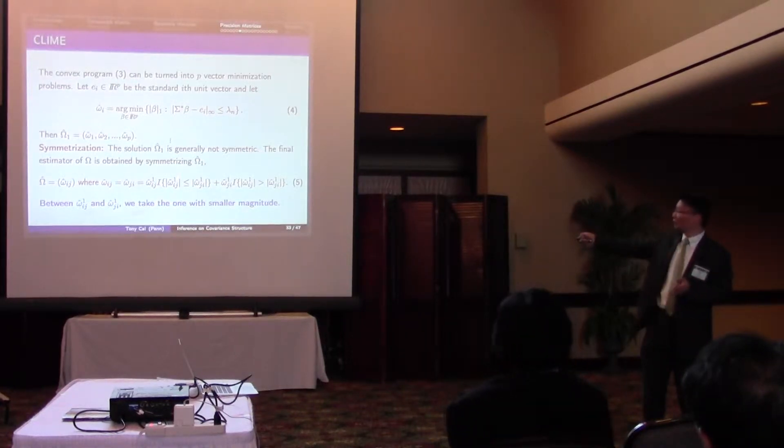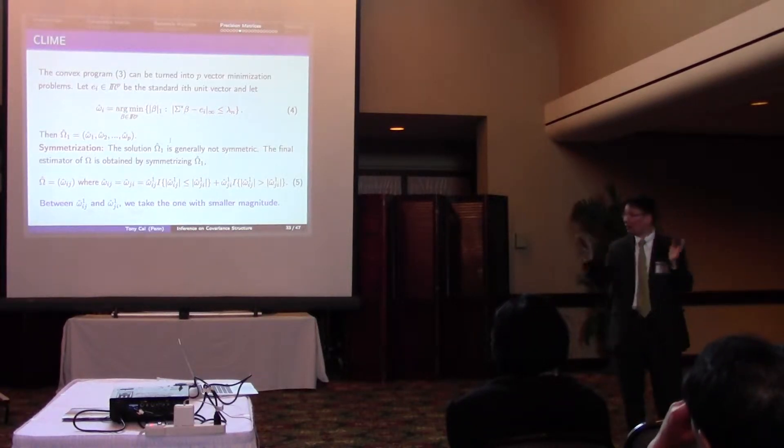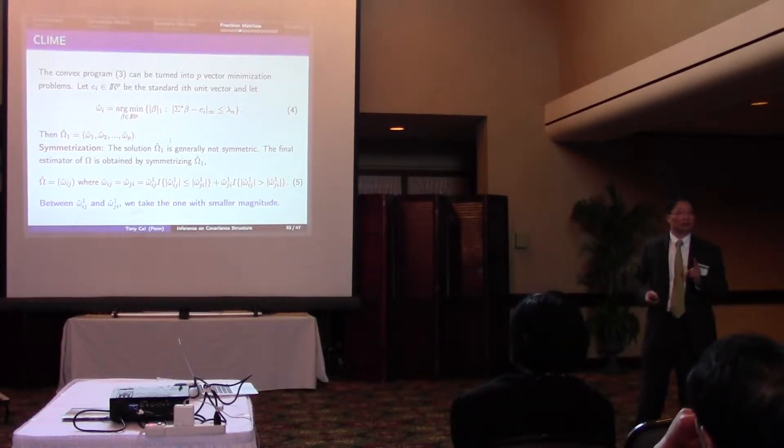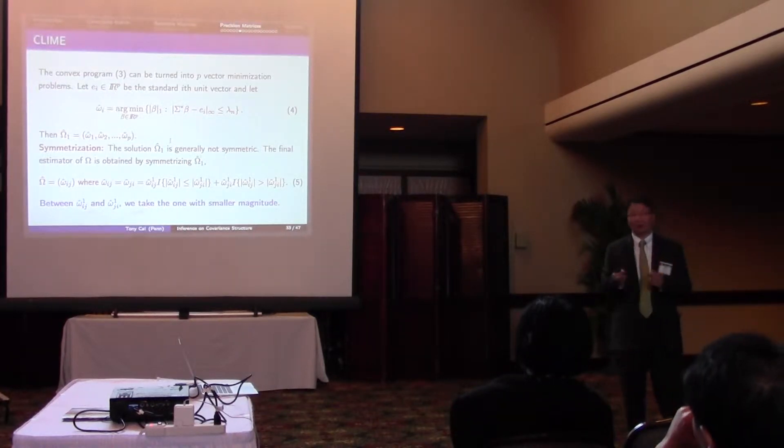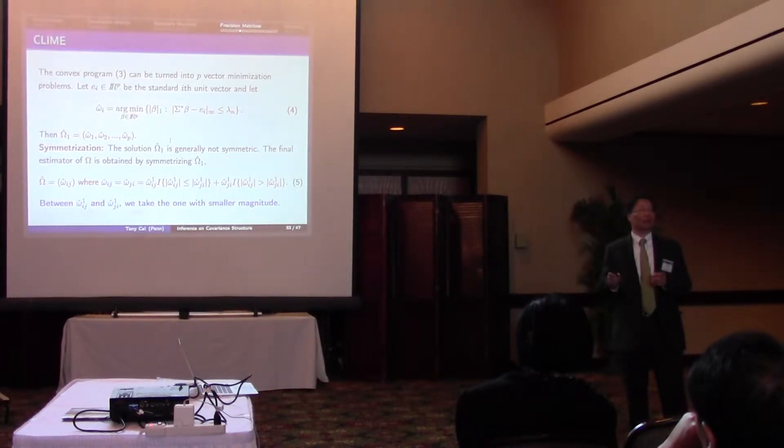That's relatively easy to deal with. So once you have the preliminary estimate called omega-1, you simply symmetrize by keeping the one with smaller absolute value. So you have a symmetric matrix, and with high probability, you can also show that this matrix is semi-positive definite.